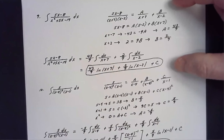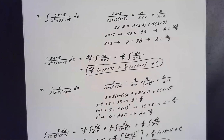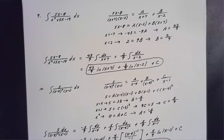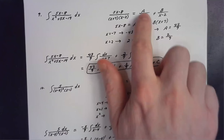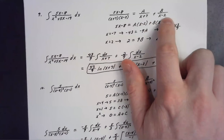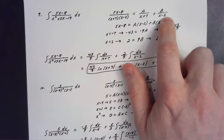So we get 43/9 times the natural log of the absolute value of (x + 7), plus 2/9 times the natural log of the absolute value of (x − 2), plus the constant of integration. Number nine is the easy partial fractions problem — a case one problem where the denominator has only distinct linear factors.